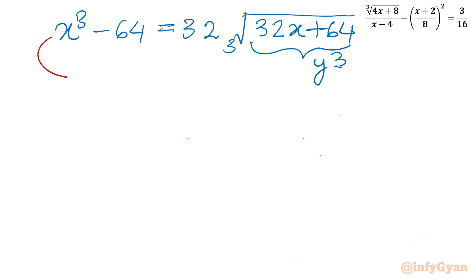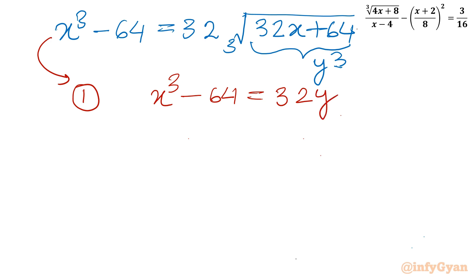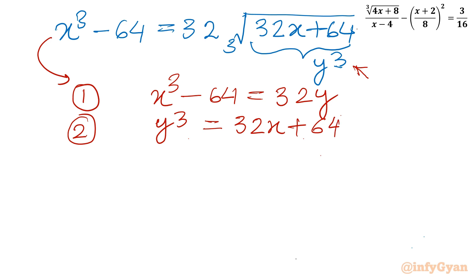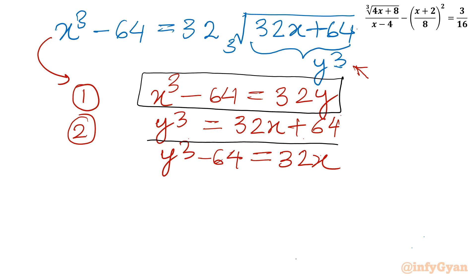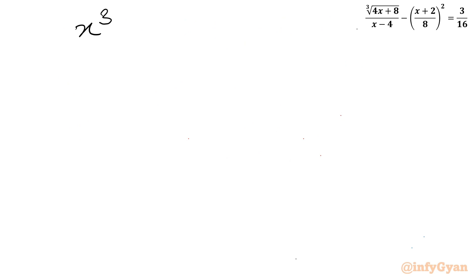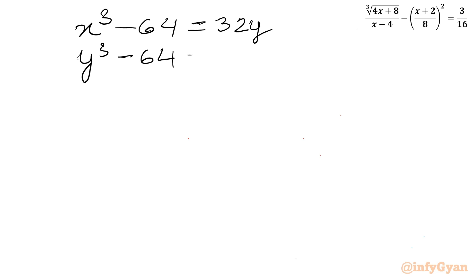I can frame two equations from here. Equation one: x³ minus 64 equals 32y. For equation two, from the substitution y³ = 32x + 64, subtracting 64 from both sides gives: y³ minus 64 equals 32x. Now we have two symmetric equations — equation one: x³ minus 64 = 32y, and equation two: y³ minus 64 = 32x.